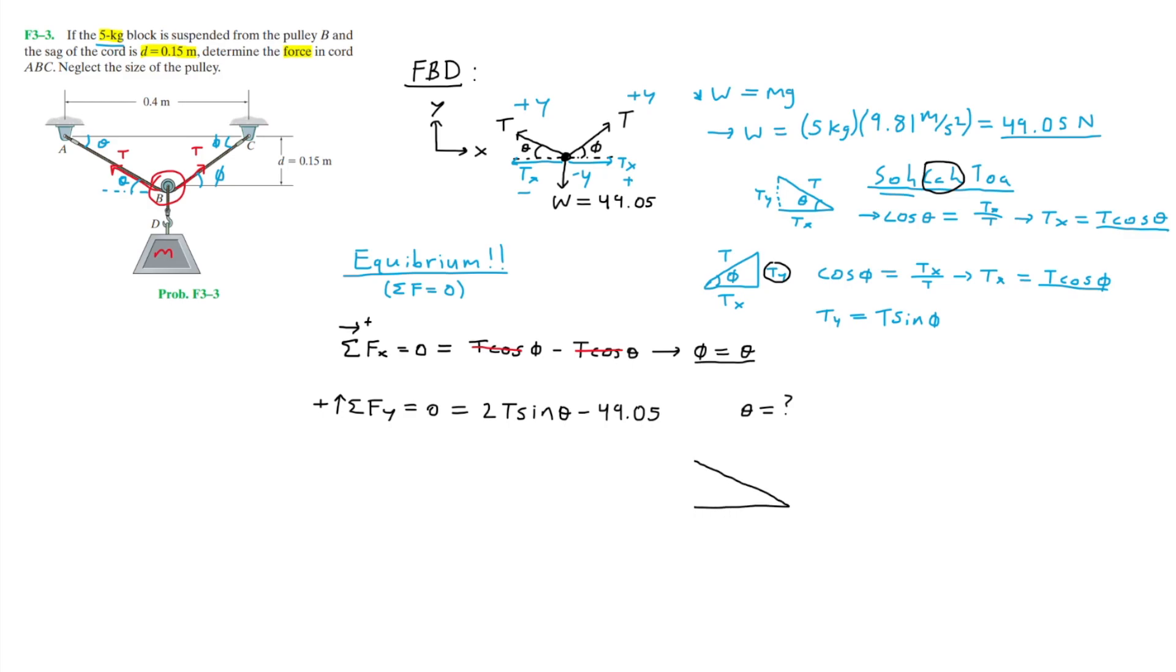If we take another look at the problem, we are given the value of D, which is 0.15 meters. We can use that value to find theta using trigonometry. Looking at the picture on the left, if we draw a vertical line, we can assume this to be the halfway point of the 0.4 meters. So this side will be 0.2 meters. This is the right triangle that is formed underneath the AB part of the chord. Since we know the values of the sides that are adjacent and opposite to angle theta, we can use tangent to find theta. That'll be tangent theta equals 0.15 divided by 0.2. Hence, theta equals inverse tangent of 0.15 divided by 0.2, which is roughly about 36.87 degrees.